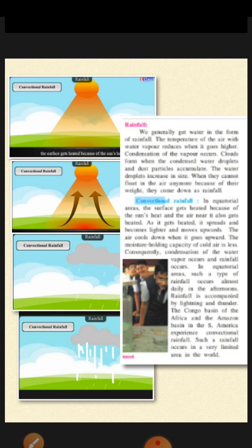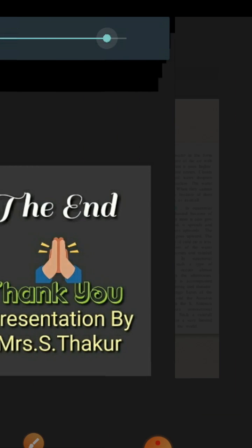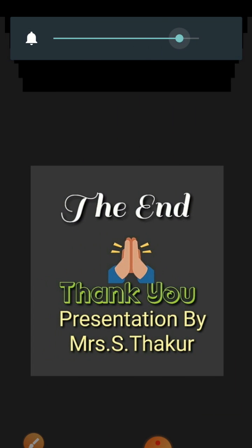So the process is: heating, then condensation, then the falling of water droplets — this is called conventional rainfall. In India, there is another type of rainfall which you will be studying in the next lesson. That's all for today. Thank you, and have a nice day.